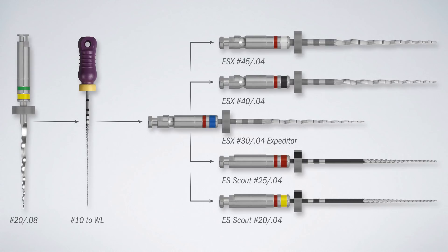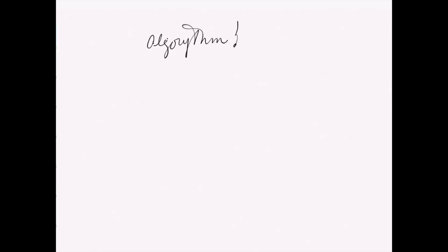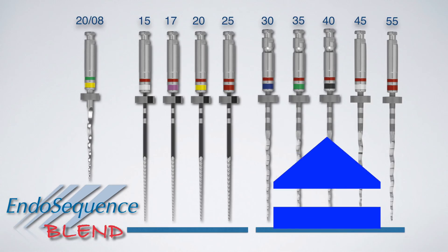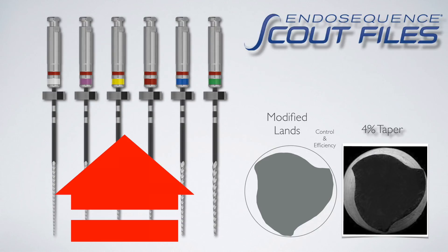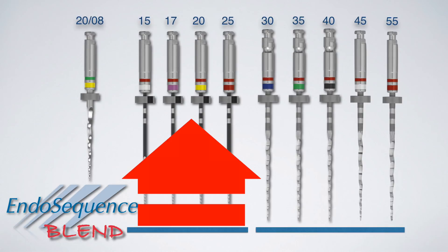The blend protocol is essentially an algorithm — a suggestion designed so that you use the least number of files needed to complete any given case. If the canal is easy, you may end up using only two files; if more complicated, you use as many files as needed to complete the case safely and effectively. The non-heat treated files in this protocol are the EndoSequence and ESX files, while the heat treated files are the newly introduced EndoSequence Scout files, which have a modified land design providing control and flexibility.